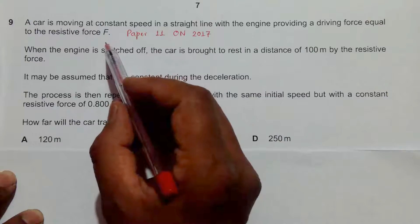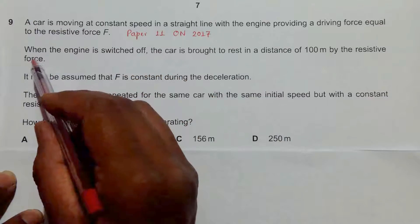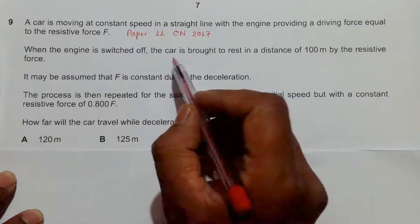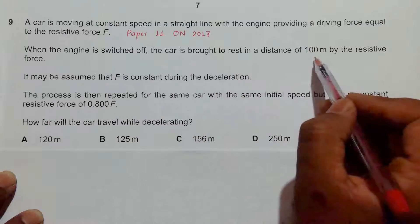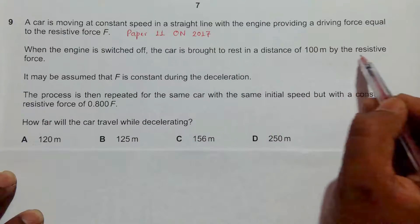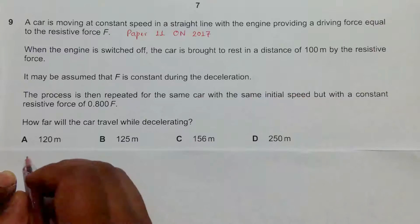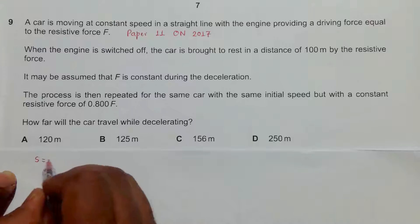When the engine is switched off, the car is brought to rest in a distance of 100 meters by the resistive force. So that means initially the distance required for resting is s equal to 100 meters.